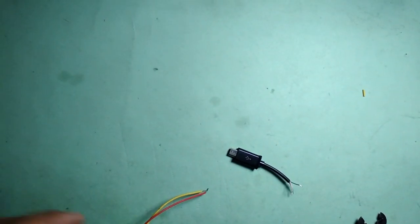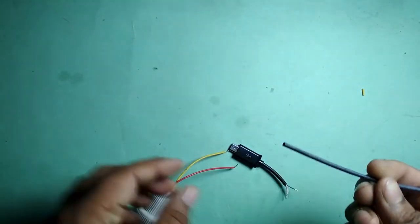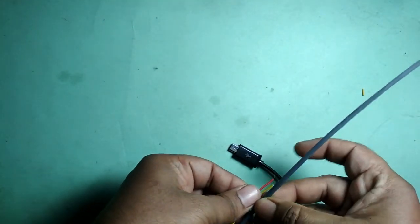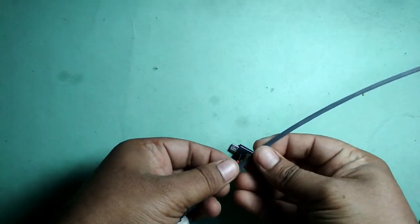Next step. Take heat shrink tube. Cut it.